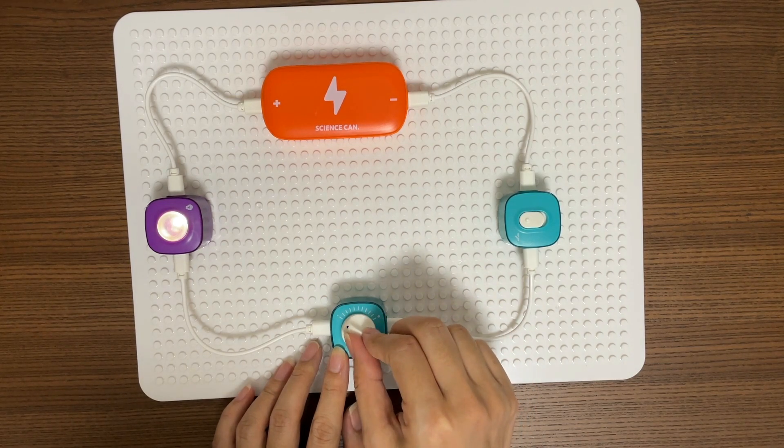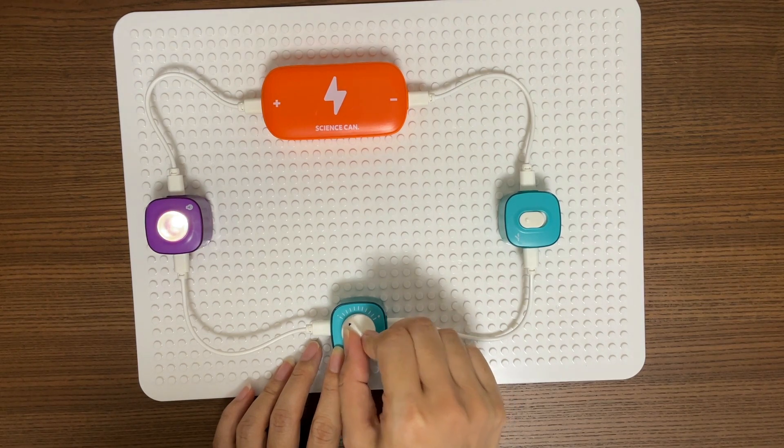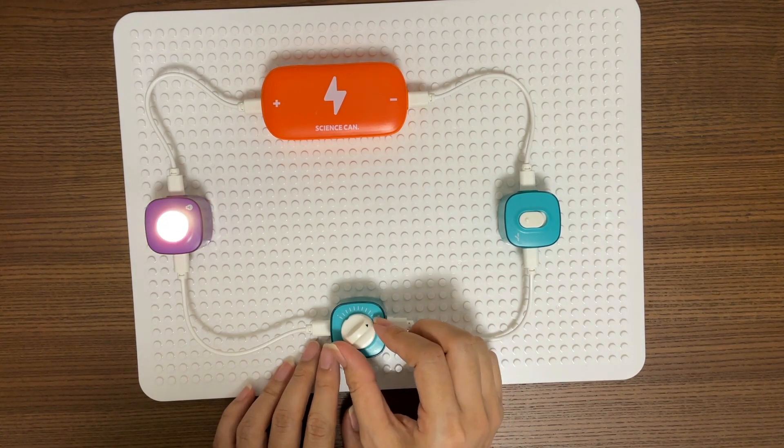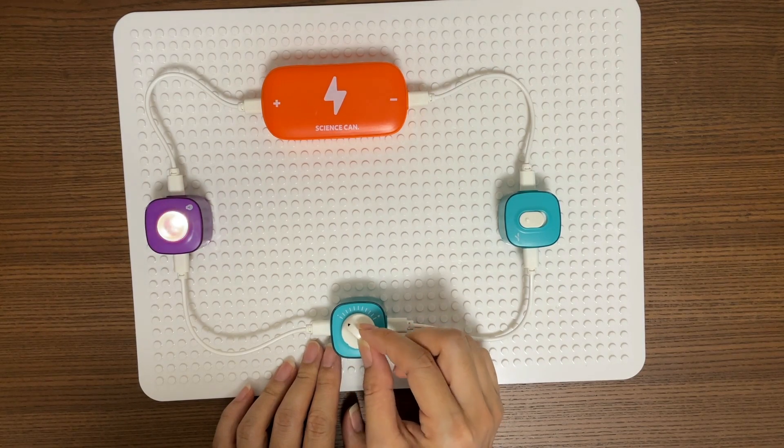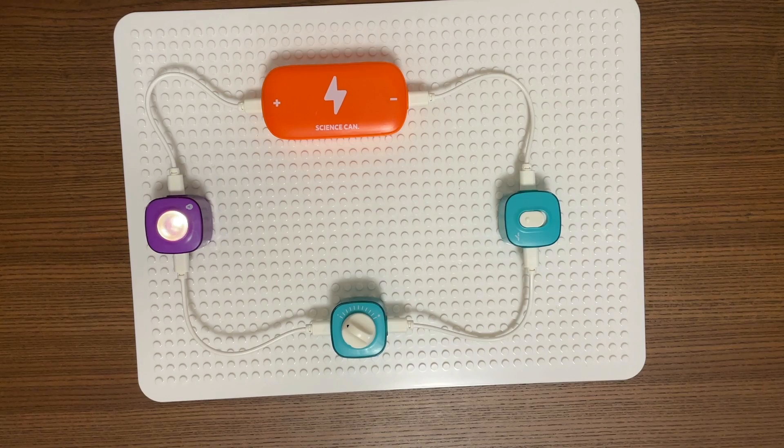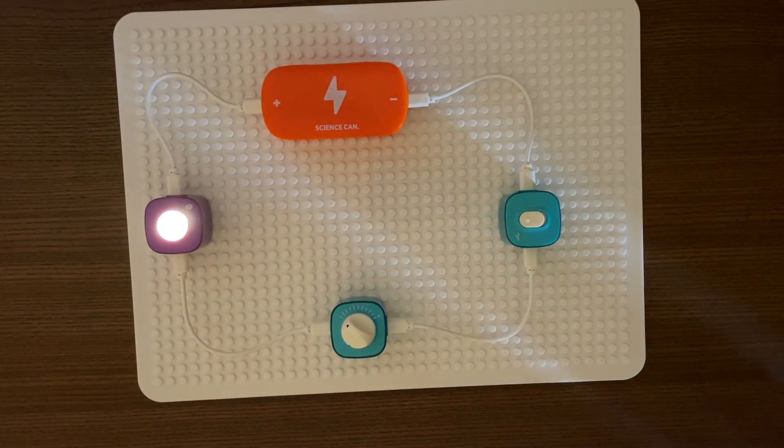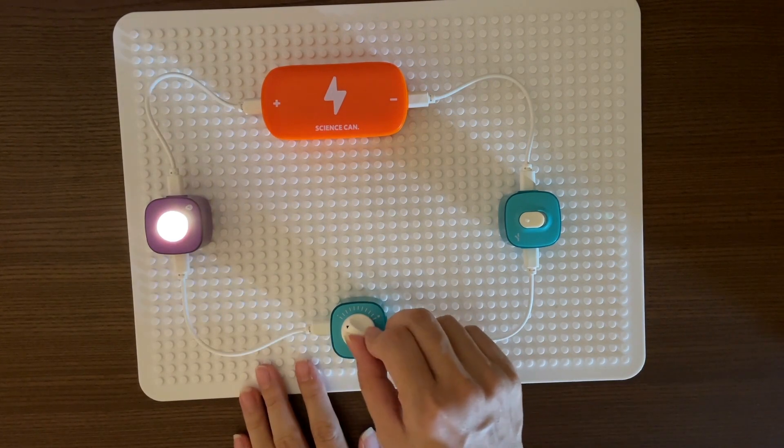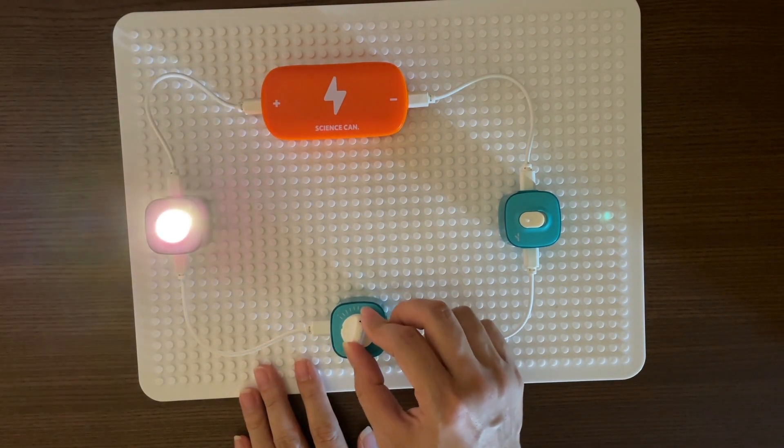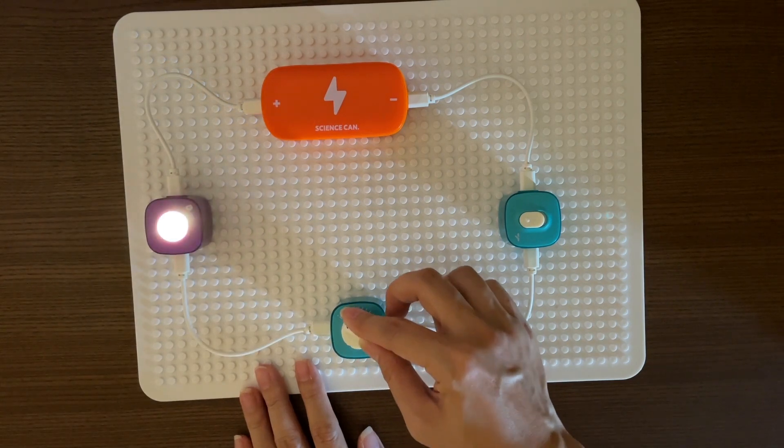As we have learned before, when we turn the knob, the resistance in the circuit will change. When the resistance goes up, there will be less current flowing through the circuit. The light will become dimmer. When the resistance is reduced, more current will flow through the circuit. The light will become brighter.